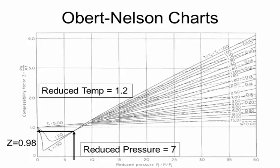This chart is called the Nelson-Obert chart. On this chart, the x-axis shows reduced pressure and the lines represent reduced temperature. For example, if the reduced pressure is 7, we locate that on the scale and read off the compressibility factor — for instance, Z = 0.98. We then include this Z value in the ideal gas equation when dealing with real gases.